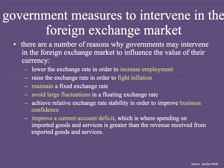There are a number of reasons why the government would get involved in the foreign exchange market for its own particular currency. Number one, they may want to lower the exchange rate in order to increase employment. They may wish to raise the exchange rate in order to fight inflation. They may wish to maintain a fixed exchange rate. Governments might get involved to avoid large fluctuations, or to achieve relative exchange rate stability in order to improve business confidence. Or lastly, they may get involved to improve a current account deficit, which is where spending on imported goods and services is greater than revenue received from exported goods and services.